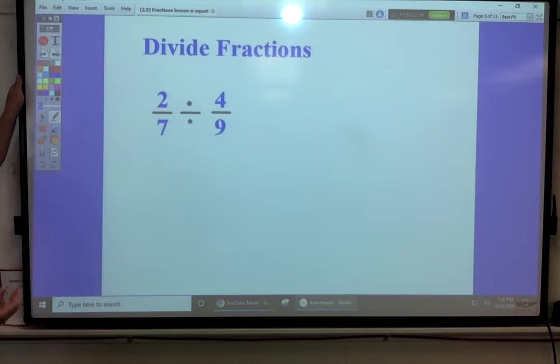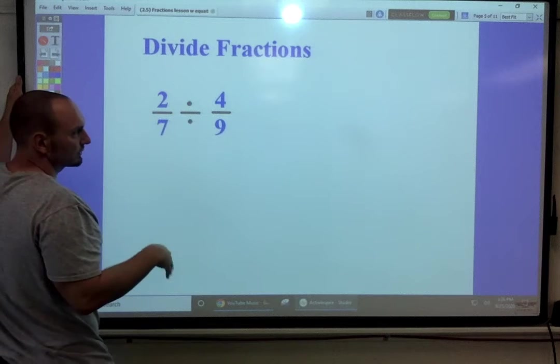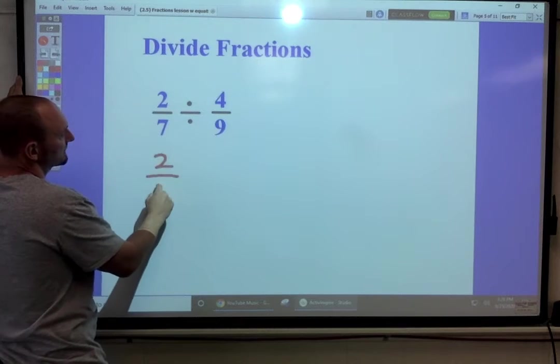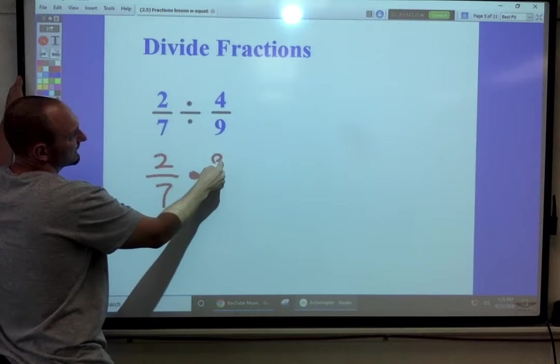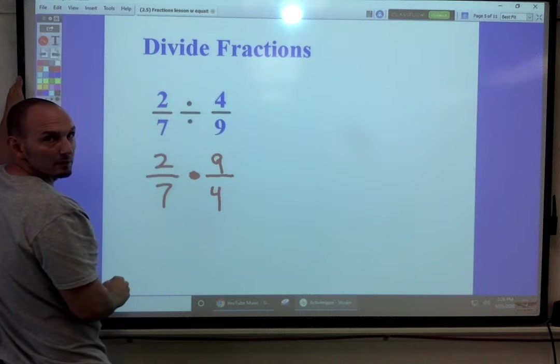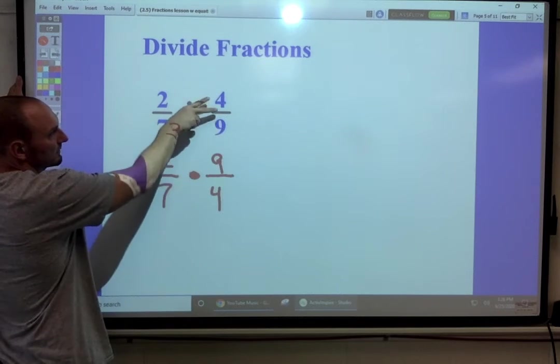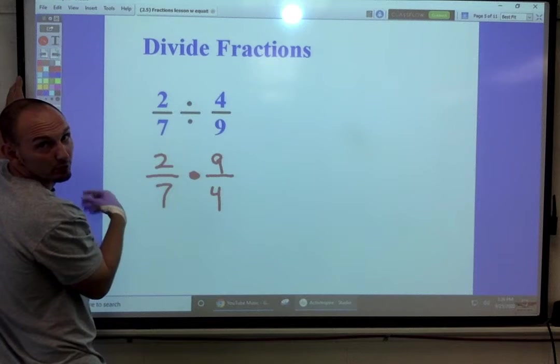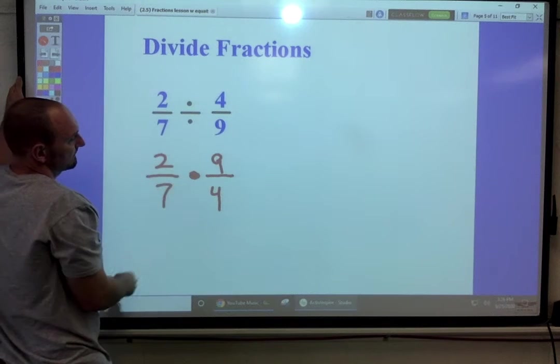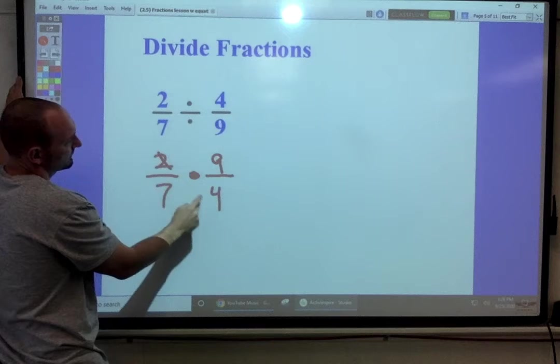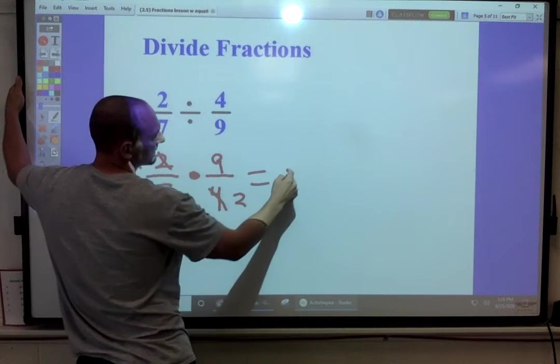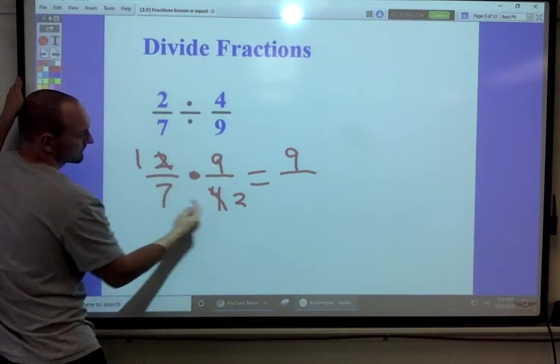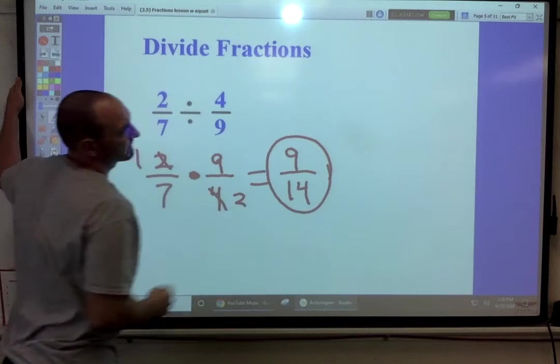Division of fractions is going to be multiplying them, but you flip the second one, whatever you're dividing by. It's going to be two-sevenths. We're going to change it to multiply and flip that nine-fourths. Now it's a multiplication problem. Flip the second one. It's called the reciprocal, if you need to know the word. And then multiply. I see two and four can be one and two. Divide them both by two. We've got nine times one, two times seven. Done. Simplify.